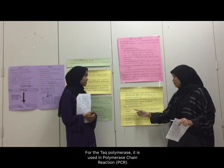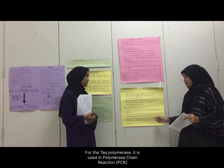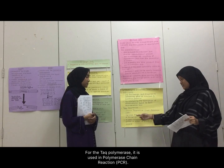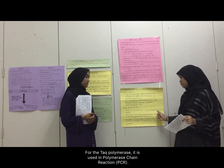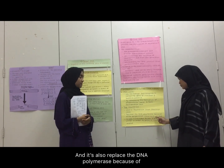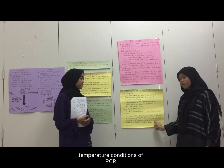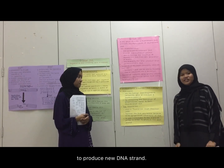For DNA polymerase, it is used in polymerase chain reaction, which is also known as PCR. It is another method of amplifying short segments of DNA. It also replaces the DNA polymerase because of the temperature conditions of the PCR, and also to add nucleotides to the 3' end of the primer in order to produce new DNA strands.